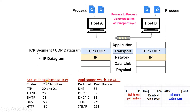There are some well-known applications which use TCP at the transport layer. These include File Transfer Protocol (FTP), which is used for transferring files; Telnet, which is used for remote login; SMTP (Simple Mail Transfer Protocol), which is used for sending emails; DNS (Domain Name System), which is used for mapping IP addresses with domain names; and HTTP, which is used for browsing the web. These applications use well-known port numbers at the transport layer.